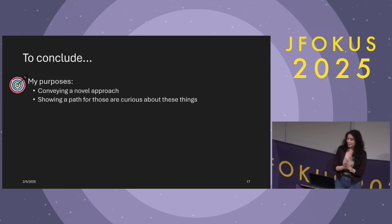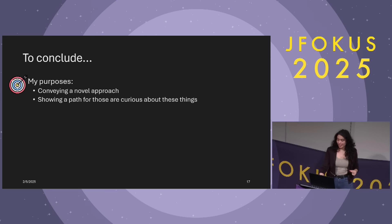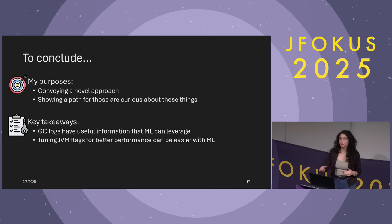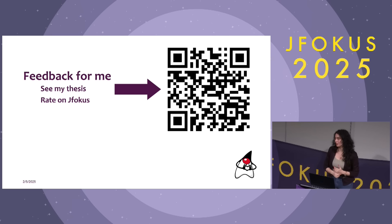To conclude, I shared a novel approach to using machine learning for JVM tuning, with the purpose of inspiring and providing a path for those who are interested in this field, so that they can try out other garbage collectors, flags, and models with a similar approach. The key takeaway is that GC logs hold valuable insights, and a well-performing machine learning model can assist users in selecting optimal JVM flag values, even without requiring deep technical knowledge of JVM internals. If you are interested, check out my thesis. I would love to hear your feedback, and in this QR code you'll find the rating link for JFocus as well. I hope you enjoyed and learned some cool things from this session. Thank you.